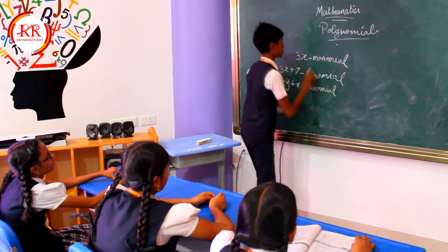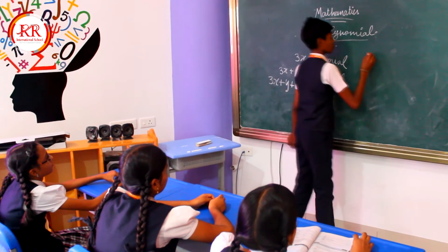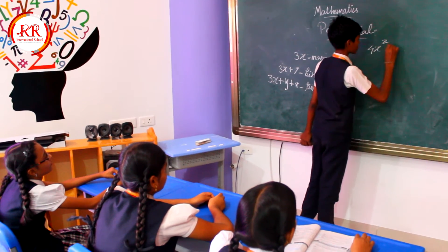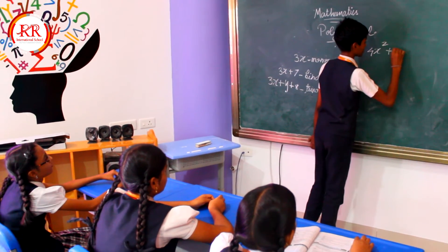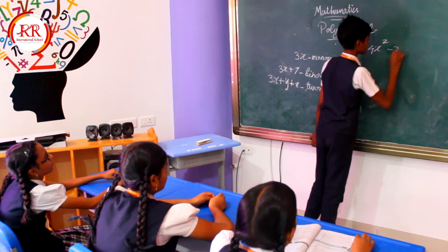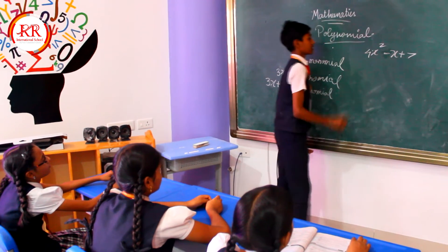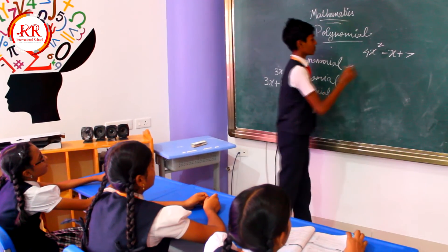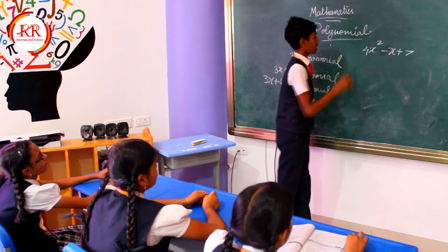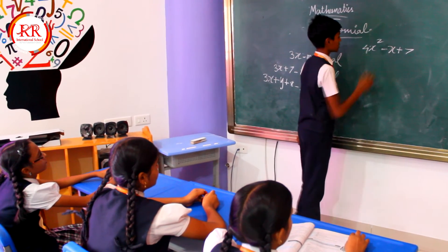So these are the three types, and now I am going to explain about coefficients. Consider 4x squared minus x plus 7. It has three terms, so it is a trinomial, and we are going to look at the coefficients.